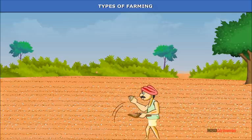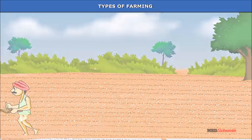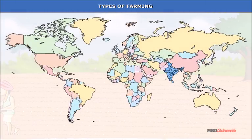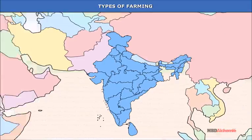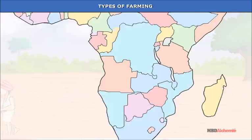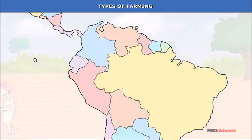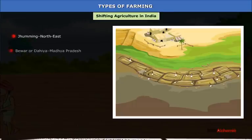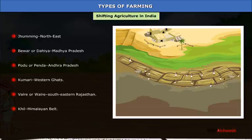Shifting agriculture: It is a form of primitive agriculture known by different names in different parts of the world — for example, Jhooming in Northeast India, Milpa in Central America, Roca in Brazil, Masol in Congo Basin, and Conoco in Venezuela. Under shifting agriculture, a small plot of land is cleared by felling trees and often burning bushes and grasses by what is known as the slash and burn method.